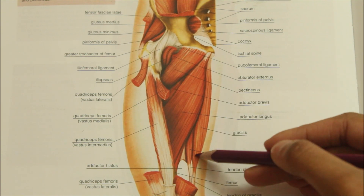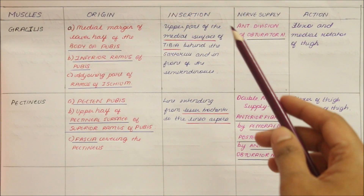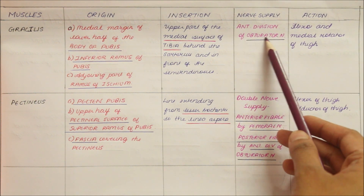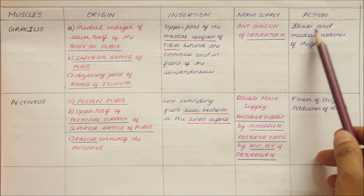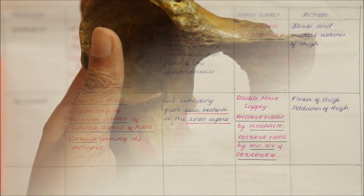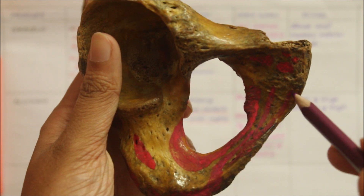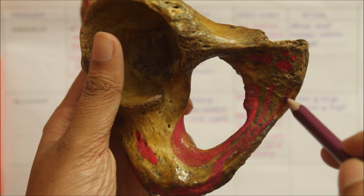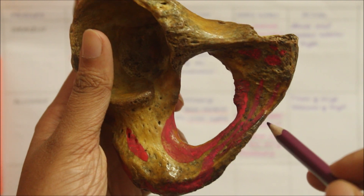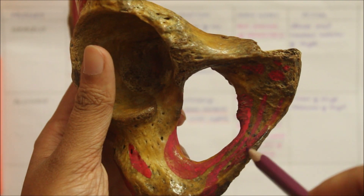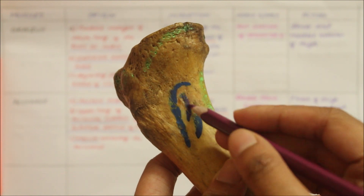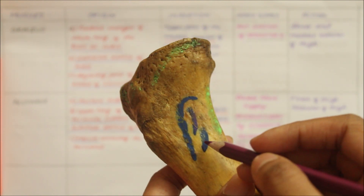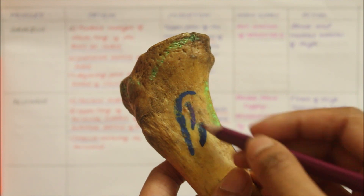The gracilis is supplied by the anterior division of the obturator nerve. Its action is that it is a flexor and medial rotator of the thigh. As a whole, the gracilis muscle originates from the medial margin of the lower half of the body of the pubis, the inferior ramus of the pubis, and the adjoining part of the ramus of the ischium, and it inserts into the upper part of the medial surface of the shaft of the tibia, behind the sartorius and in front of the semitendinosus.